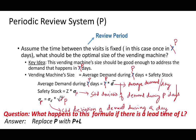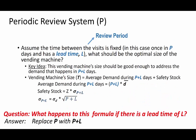I'm going to notate the vending machine's size as T, representing the target level. Replacing P with P plus L, the vending machine's size should be good enough to address the demand that happens during P plus L days. The target level T equals the average demand during P plus L days, which is P plus L times D-bar, plus safety stock based on the standard deviation of demand during P plus L days.